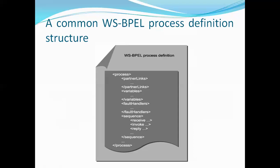The sequence tag is also used, and within the sequence tag there are three different sub-tags: receive, invoke, and reply. In my next lecture I will explain each and every tag used in BPEL — process tag, partner link tag, variable tag, fault handler tag, sequence tag, and within sequence: receive, invoke, and reply.